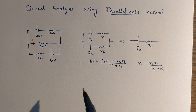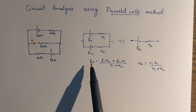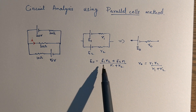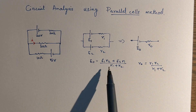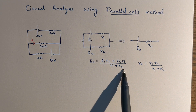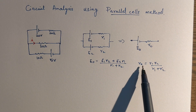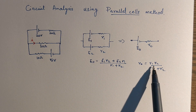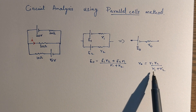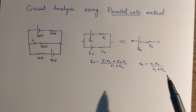The resultant EMF E-naught is given as (E1·R2 + E2·R1) divided by (R1 + R2), and the equivalent internal resistance R-naught is given as (R1·R2) divided by (R1 + R2).